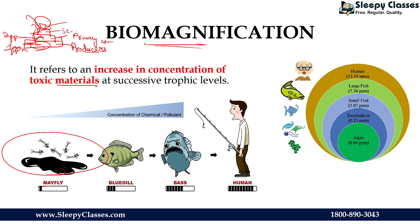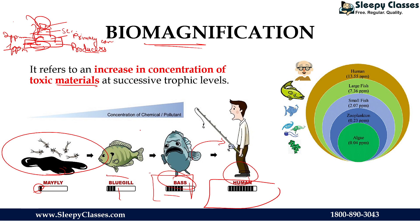For example, here with a Mayfly, the toxic chemical concentration starts at a low level. It is consumed by bluegill, and the concentration increases. Which is in turn consumed by bass, so the concentration increases further. And when humans are consuming, the concentration of chemicals and pollutants will increase at each trophic level.